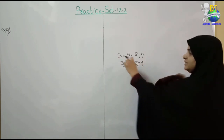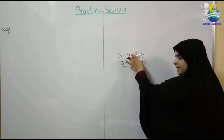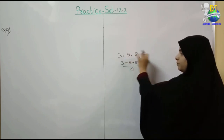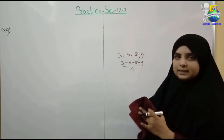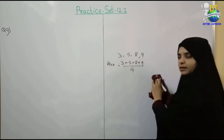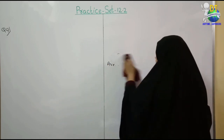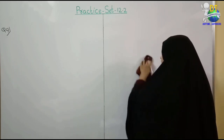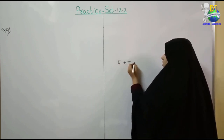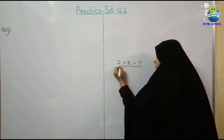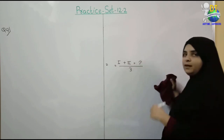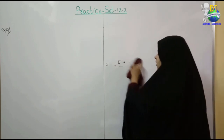तो average कैसे निकालते हैं? Sum of scores — उन सबका sum divided by number of scores. कितने numbers add करें, उन्हें नीचे लिखते हैं if you view average. तो first match के runs दिये हैं, second match के runs दिये हैं — first match plus second match. Third match के हमें पता करना है — average is also given — बहुत ही simple है।